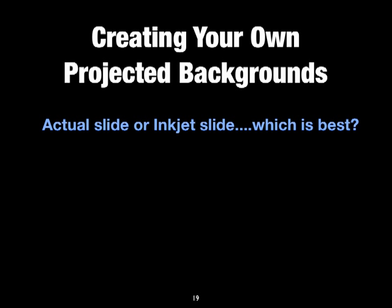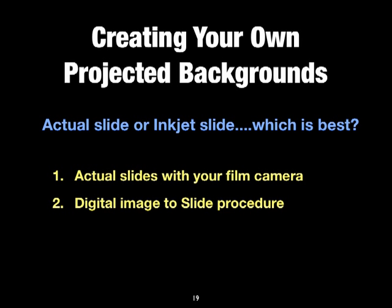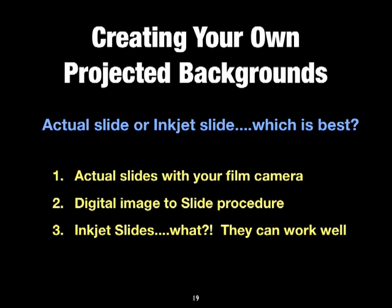An actual slide or an inkjet slide — which is best? Well, that depends. Actual slides you can do with your film camera — put some slide film in and go out and take pictures of what you want to use as backgrounds. You can also make a digital image and have it made into a slide. Inkjet slides will be from your digital image. Now, you need to think about — if you have the system, you know that it's the center of the slide that gets put on the background more so than the edges. You can slide it back and forth or up and down.